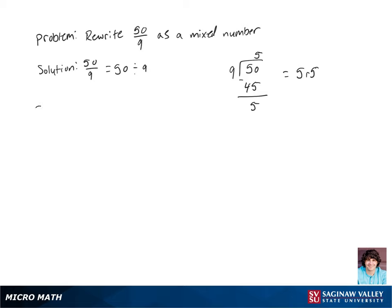Now to rewrite 50 ninths as a mixed number, we're going to take our quotient, which is 5. Then for our fraction part, we're going to say it is our remainder over our divisor. So our final answer is 5 and 5 ninths.